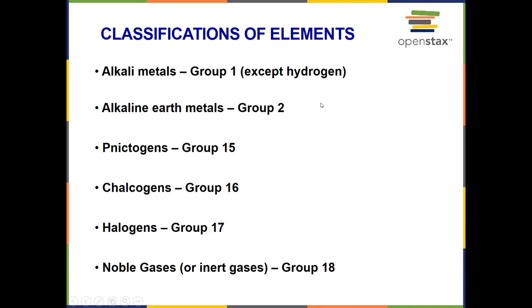Alright, so other groups have names. Alkali metals in group one, alkaline earth metals in group two, group 15, the nictogens, the chalcogens in group 16, halogens group 17, and finally the noble gases. Those are in group 18, on the far right column of the periodic table. All of those are noble gases, and they're inert, so that's also why they're called inert gases.